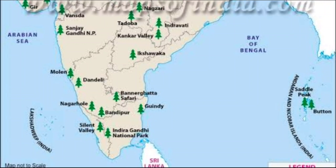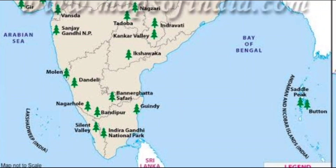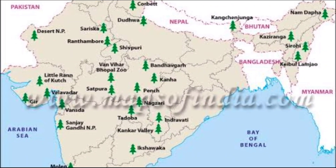You have to locate at least five national parks in the Indian political map. I have taken one Indian political map, and the same type of map you also have to collect for practice purposes, as well as for the annual examination. You have to purchase the same type of map and you will be notified in your group beforehand so you can arrange this map ahead of time.